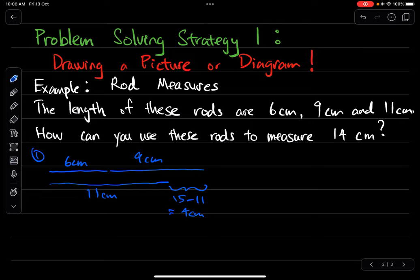If I think about it, if I have three rods, how many ways can I line two of them together? I actually have three combinations. So let's draw the diagram for all three combinations.